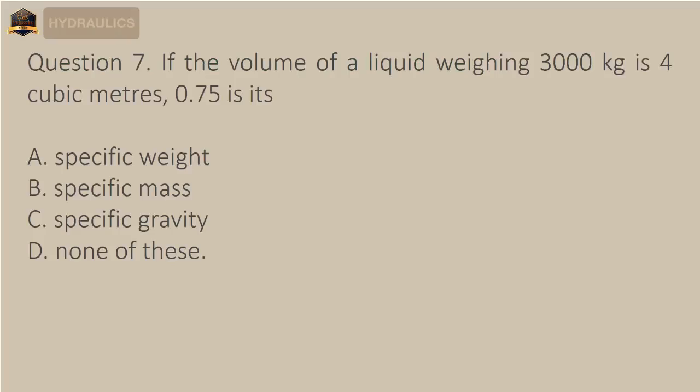Question 7: If the volume of a liquid weighing 3000 kilograms is 4 cubic meters, 0.75 is its — A) specific weight, B) specific mass, C) specific gravity, D) none of these. The correct answer is option C: specific gravity.